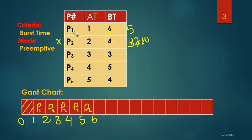Now we have four processes: P1, P3, P4, and P5. Burst time for P1 is 5, P3 is 3, P4 is 5, and P5 is 4. I'm going to choose P3 because it has the smallest burst time. I'm putting P3 here. At time 7, P3's remaining burst time is 2, which is still the smallest, so P3 continues. 7 plus 2 is 9. P3 finishes at time 9. P3 is completely done.